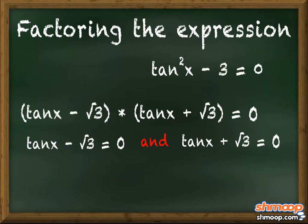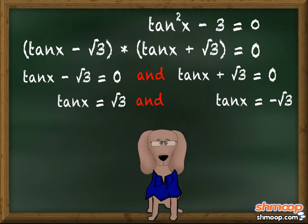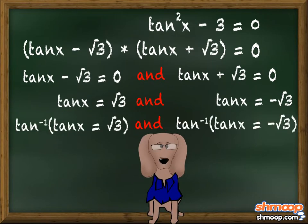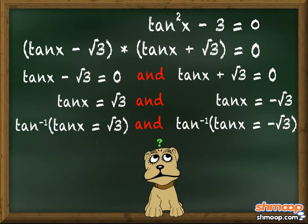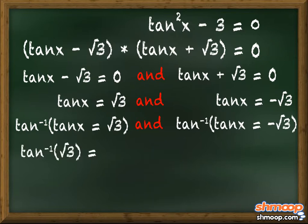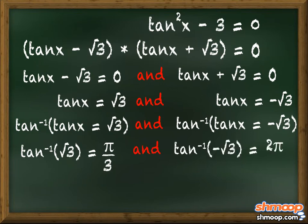Solving each of the equations with a speed we frankly didn't think possible for him, he ends up with two equations. Using a technique he must have studied with his trigonometry teacher, he is taking the inverse tangent of both of the equations to solve for x. Reaching far back into the recesses of his canine brain, he recalls that the inverse tangent of √3 is π/3, and the inverse tangent of negative √3 is 2π/3.